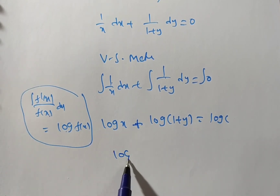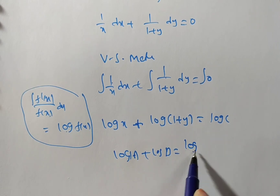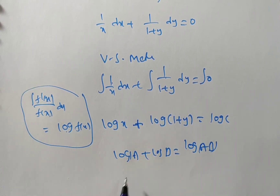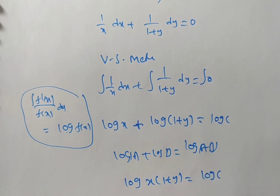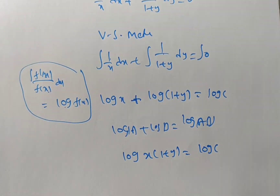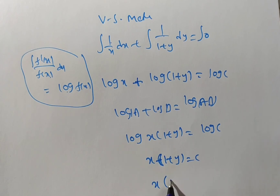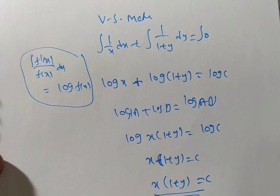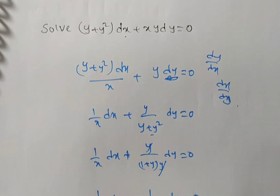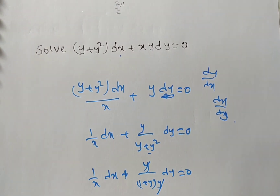This is of the form log a + log b, so we can write log(ab). Therefore, log x(1 + y) = log c. Applying anti-log on both sides, we get x(1 + y) = c. This is the solution of the given differential equation: (y + y²)dx + xy dy = 0.